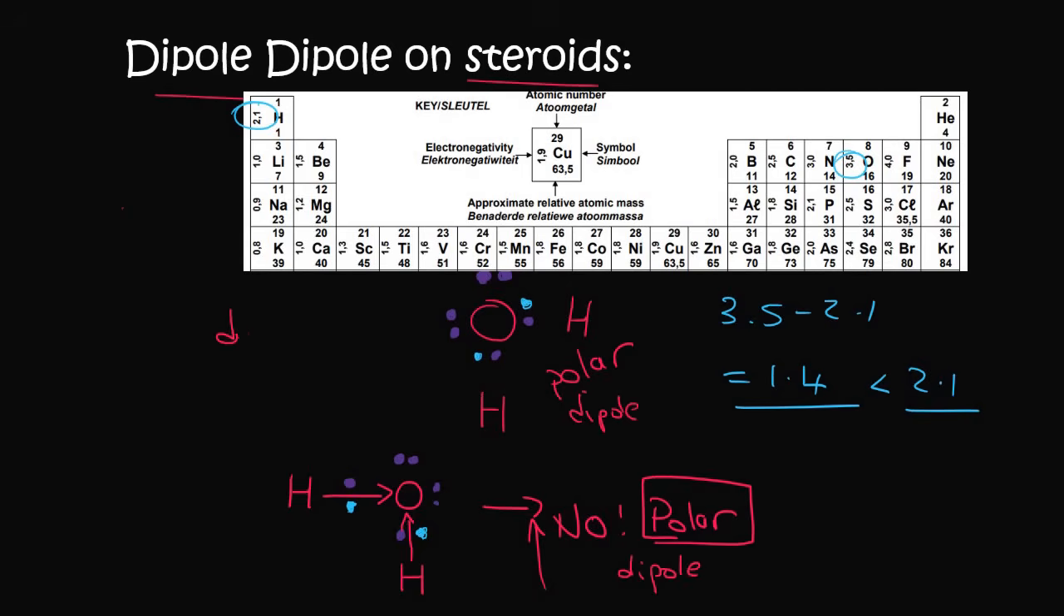And so in the previous lesson we would have called this a dipole-dipole. But there is an exception to the rule. If you have molecules where you have hydrogen bonded with either nitrogen, oxygen or fluorine, which are the three musketeers up here in the top right corner, then we get a totally different kind of bonding, which is called hydrogen bonding.